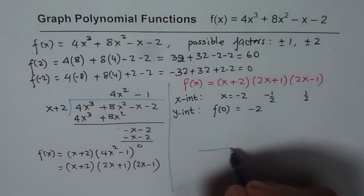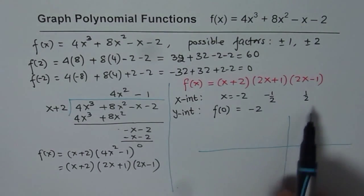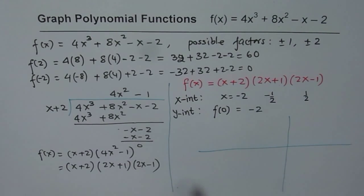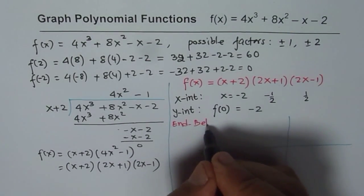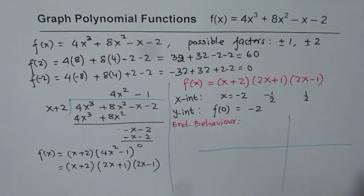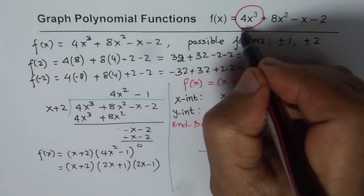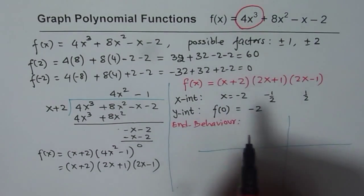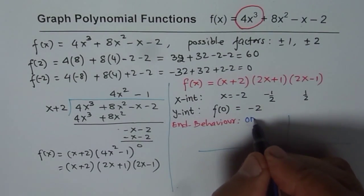And now we are in a position to sketch the graph. So our zeros are at minus 2, minus half, and half. And y-intercept is at minus 2. Now to sketch the graph, we should actually look into end behavior. So let's look into end behavior. End behavior is decided by two factors. And that is the leading term, 4x cube. So what we see here is that the function is odd. Degree 3 means odd function.